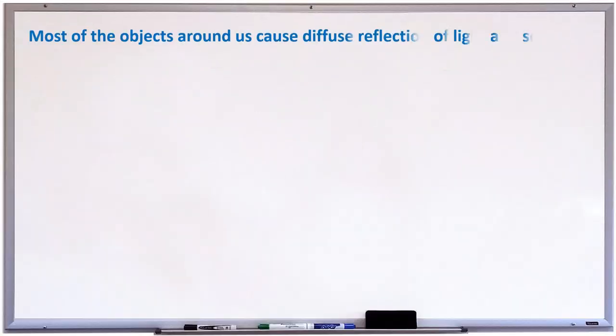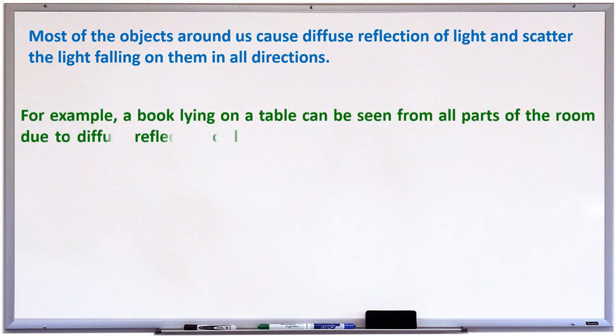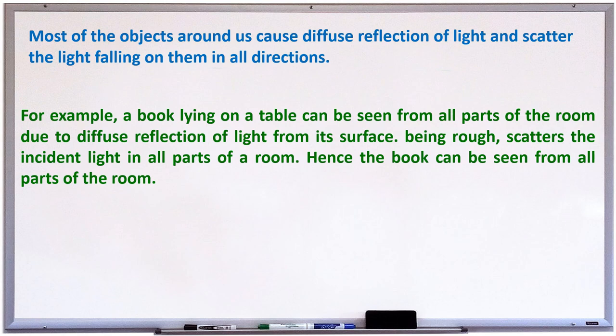Most of the objects around us cause diffuse reflection of light and scatter the light falling on them in all directions. A book lying on a table can be seen from all parts of the room due to the diffuse reflection of light from its surface. Being rough, it scatters the incident light in all directions, hence the book can be seen from all parts of the room.